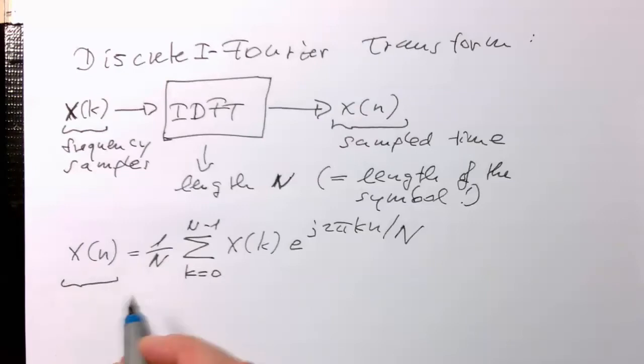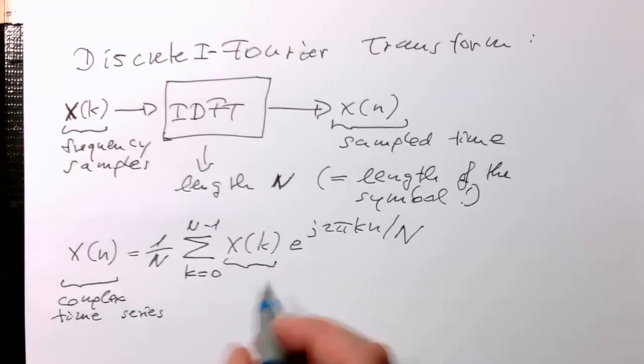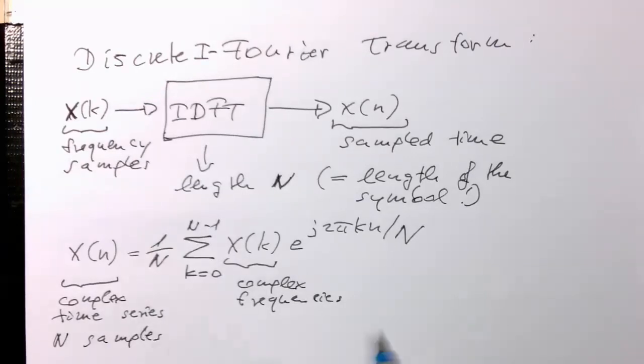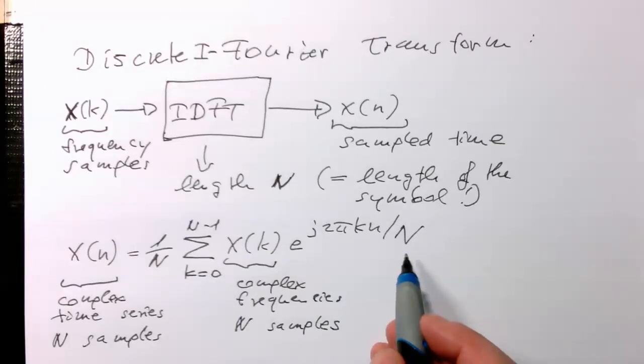And so these are our complex time series. We've got this complex time series with N samples. And also here we have N samples. And we see the N shows up here again.